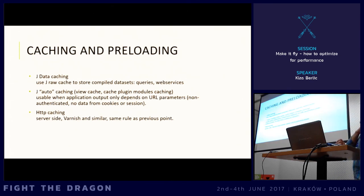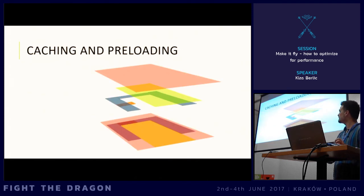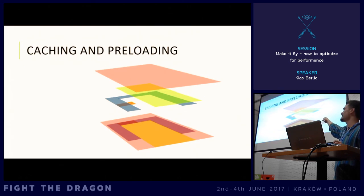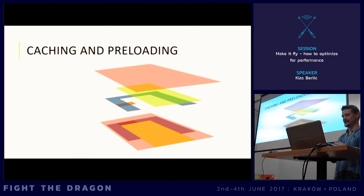There is also HTTP caching, which is more server-side like Varnish or similar, but the same rules as the previous point apply. This is the illustration of how Joomla caching types work: on top is the caching plugin, the green one is view caching, the gray areas are modules, and the orange represents method cache used underneath — and that's how it's combined on the page.